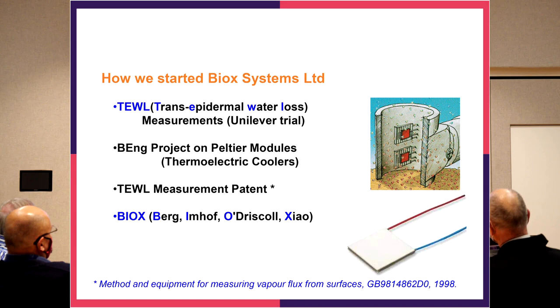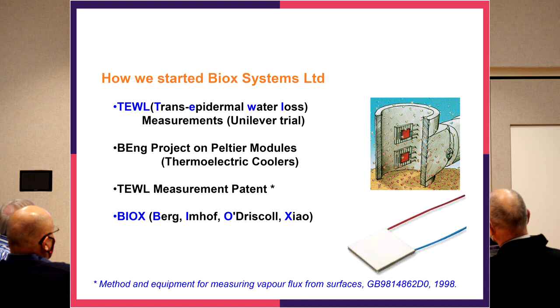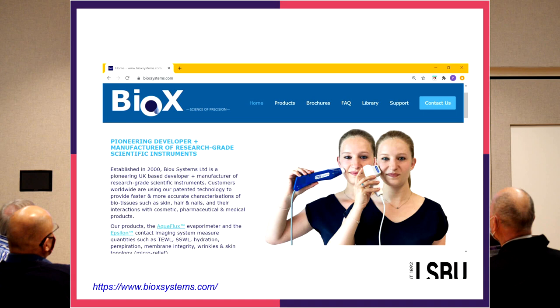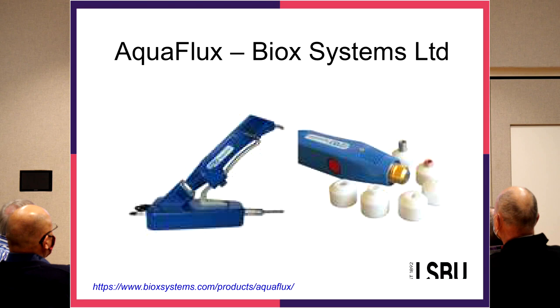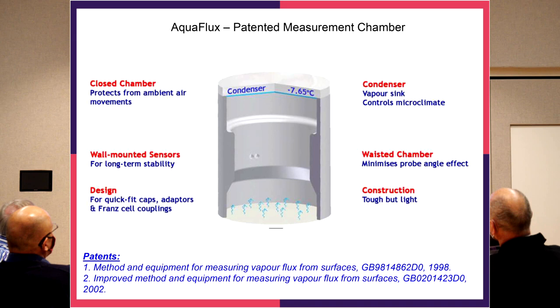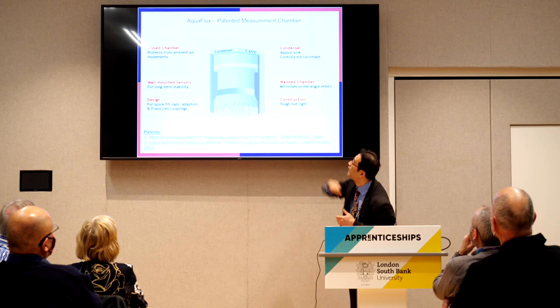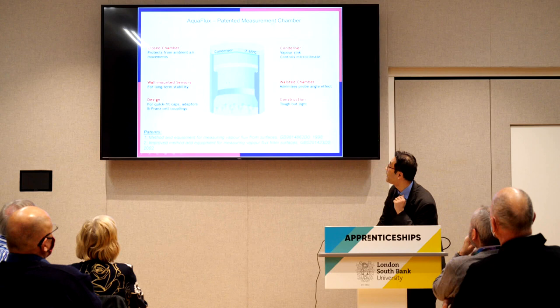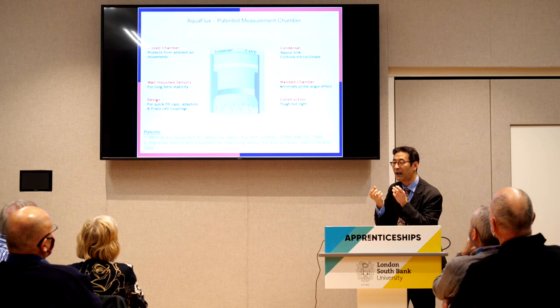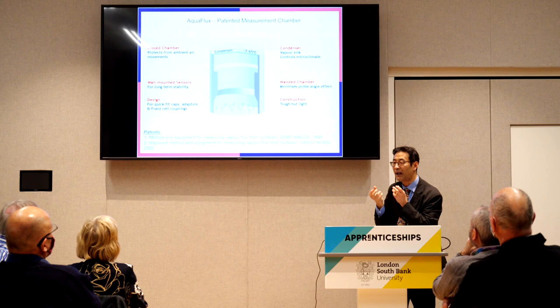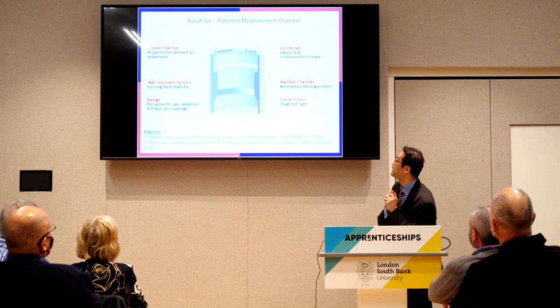BIOX is actually the initials of four of our researchers. Bob Imhof was the supervisor, and Elliott Berg, Donald Risco, and I were Bob's PhD students — that's how we get the company name. Now we have two measurement instruments: Aquaflux and Epsilon. The Aquaflux is based on this key patented measurement chamber — a closed chamber with a condenser on top cooled to minus 7 degrees, a waisted chamber, and a temperature and humidity sensor inside.